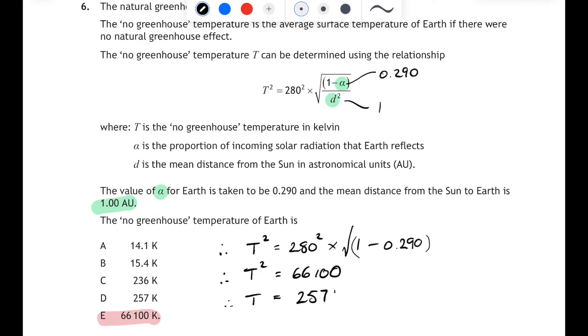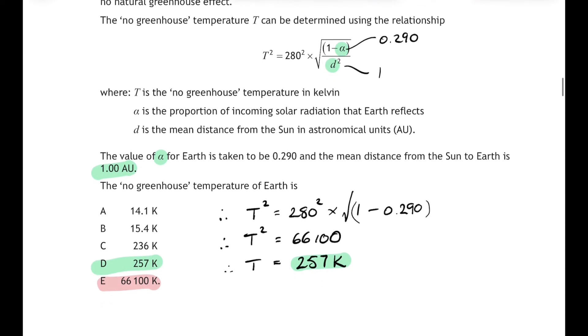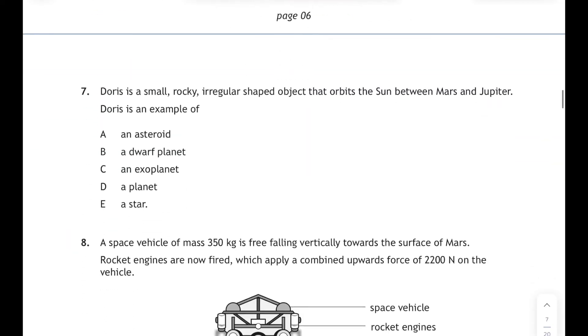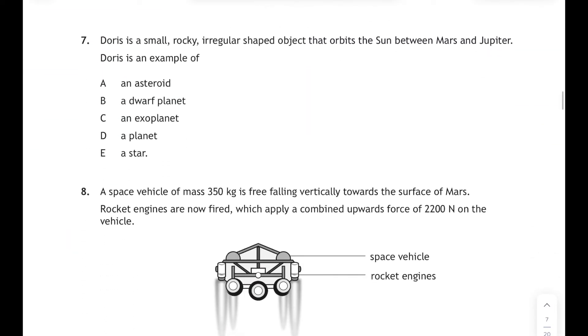So that will be 257 kelvin, and 257 kelvin corresponds to answer D. That's pretty tricky, but you will always get a question like this with an unfamiliar relationship, but you're just subbing in the numbers and finding the answer. Okay, question seven.